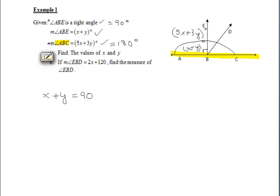Similarly, we take a look at angle ABC. We know that that angle is represented by the expression 5x plus 3y. And since it's a straight angle, it must add up to 180 degrees or equal 180 degrees.